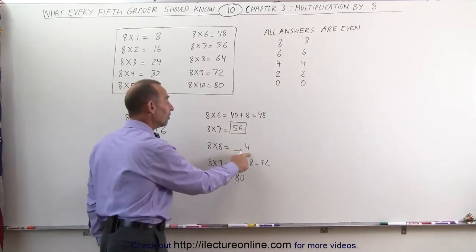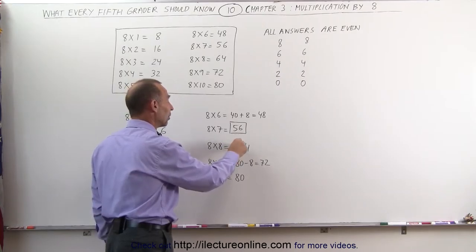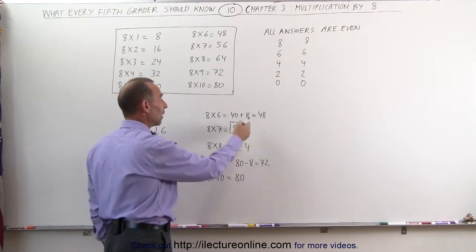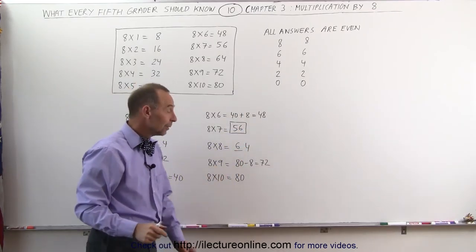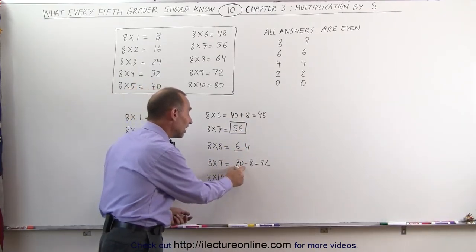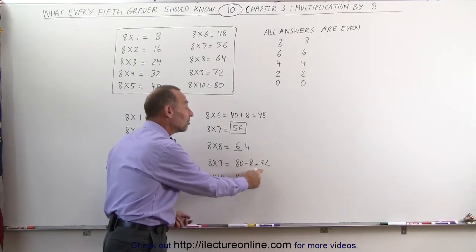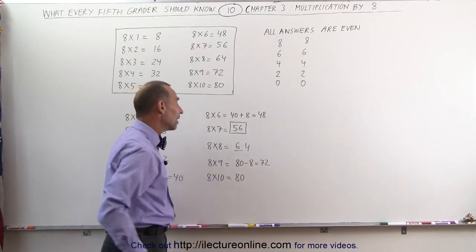8 times 8, we know it ends in a 4, and the next number in front would be a 6. Notice we have a 4, a 5, a 6, and a 7 in front. Here, 8 times 9, well, I do 8 times 10, which is 80, minus 1 of the 8s, which gives me 72. And finally, 8 times 10 is 80.